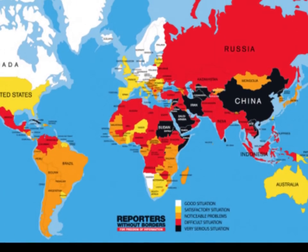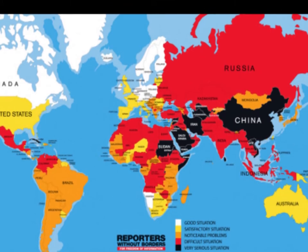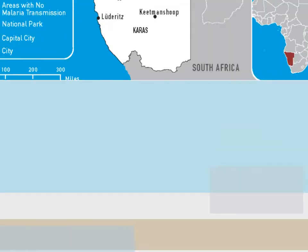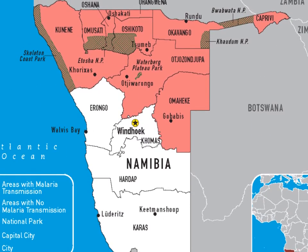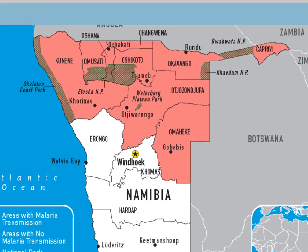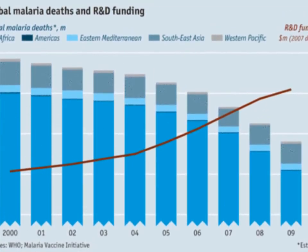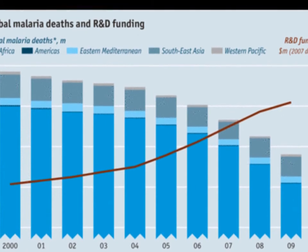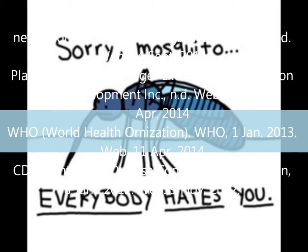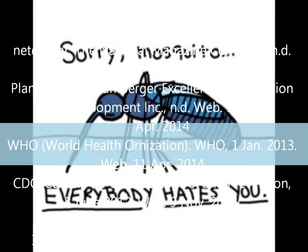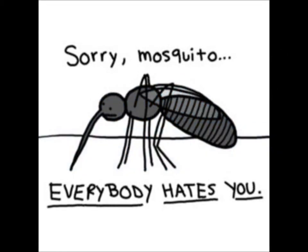Symptoms of malaria include fever, headache, and vomiting, and usually appear between 10 and 15 days after a mosquito bite. If not treated, malaria can quickly become life-threatening by disturbing the blood supply to vital organs.